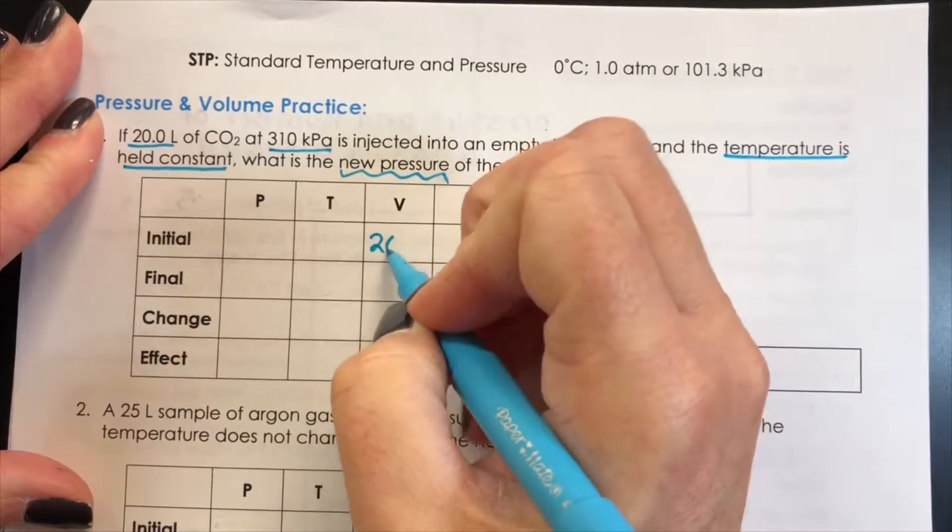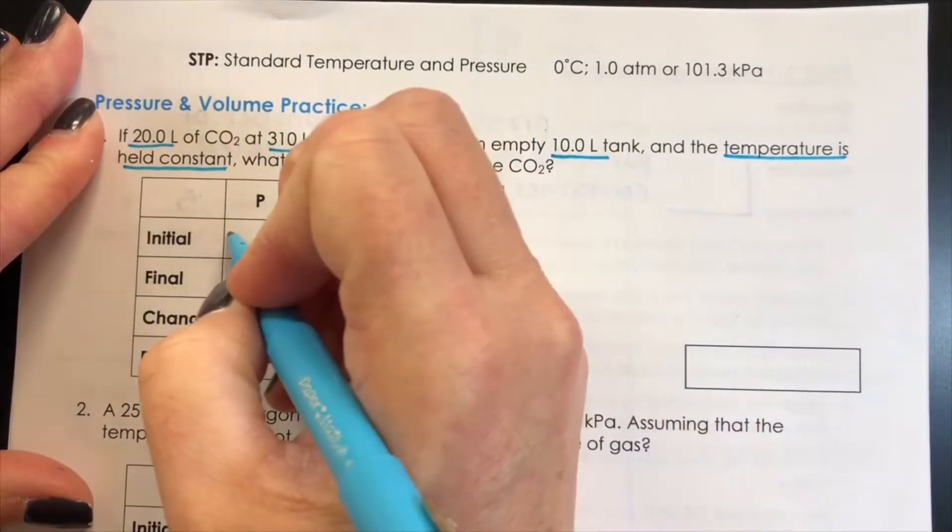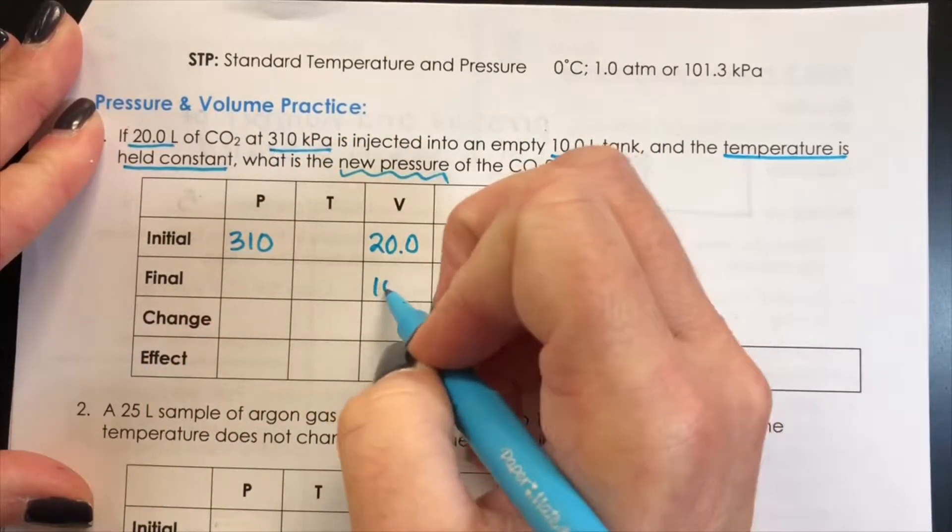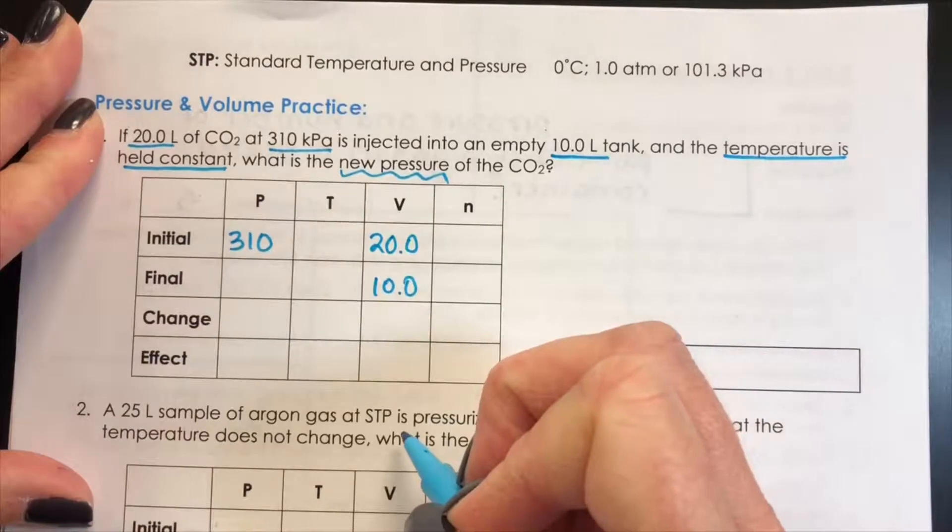The initial volume of the gas is 20 liters and has a pressure of 310. They move the gas into a 10 liter tank which is our final volume.